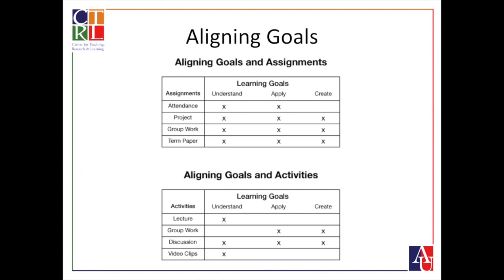Here's a quick table of how course assignments and activities actually align with different goals. For example, grading students on their ability to watch video clips or lectures does not actually demonstrate a learning goal that requires them to apply or create. Creating a matrix like this may help you choose which assignments and activities to include in your class.